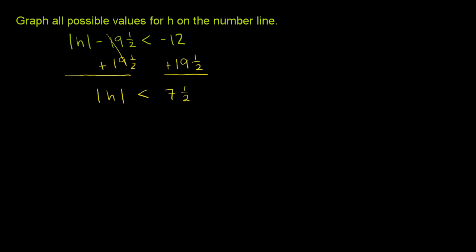another way to interpret this. Remember, absolute value is the same thing as distance from 0, so another way to interpret this statement is that the distance from h to 0 has to be less than 7 and a half.